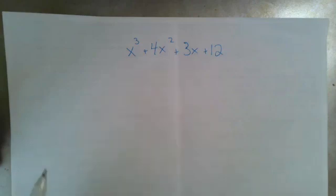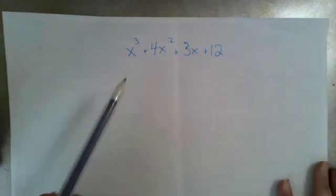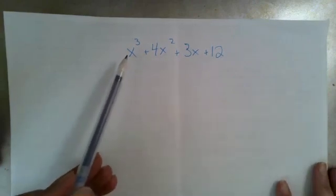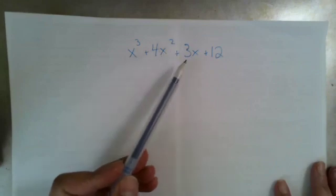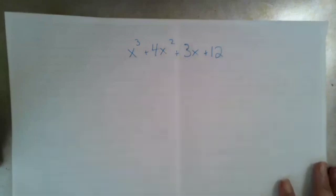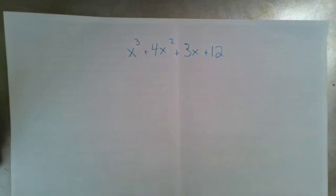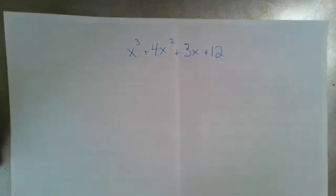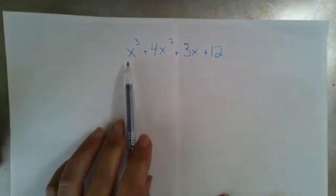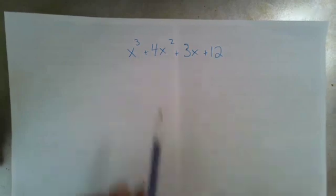Here is a polynomial with four terms. We have our x cubed term, our x squared, our x, and our numerical term. We can't just throw this into the quadratic formula because it's not a quadratic equation — it's got this extra term.